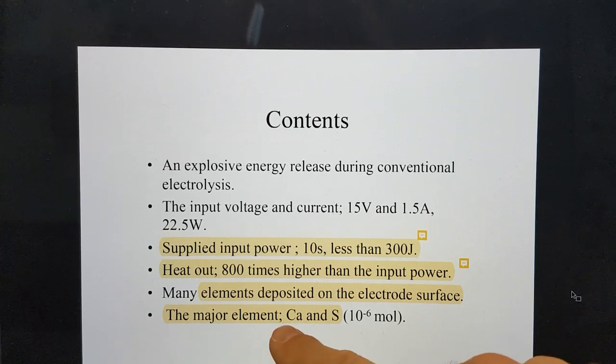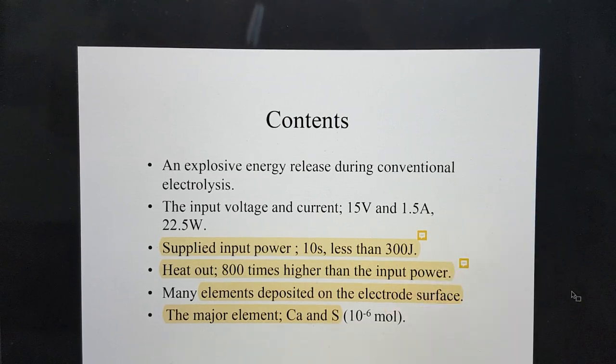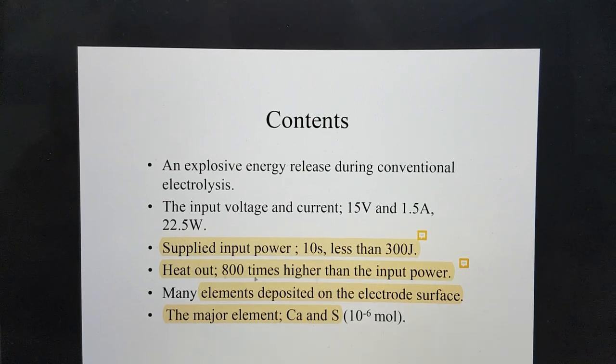The key points are that you have a 10-second input of around 300 joules electrical input power. The thermal power estimated out is about 800 times that. The observed elements deposited on the electrode surface with the major elements being calcium and sulfur. I did say this was decalpha, but sulfur, if you get two oxygens, they are 16, and they go to sulfur 32. Oxygen is effectively quadalpha, and sulfur is effectively octalpha. They're essentially made of alpha conjugate nuclei.